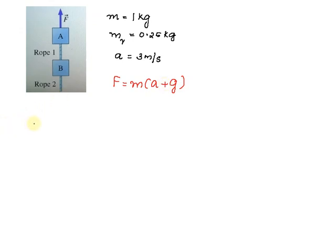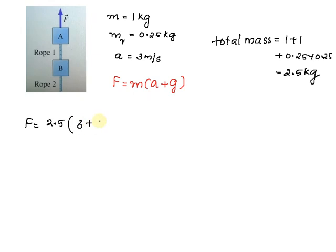On substituting, we will get F equals the total mass of the system, that is 1 plus 1 plus 0.25 plus 0.25, which equals 2.5 kilograms, into acceleration 3 plus acceleration due to gravity 9.8, and we will get the force as 32 newtons.